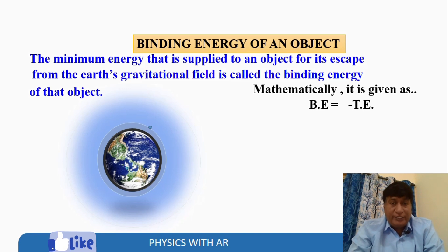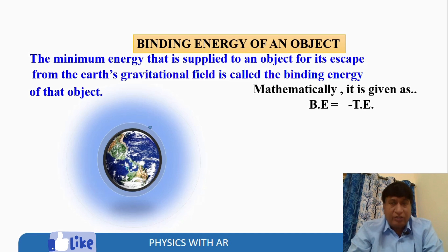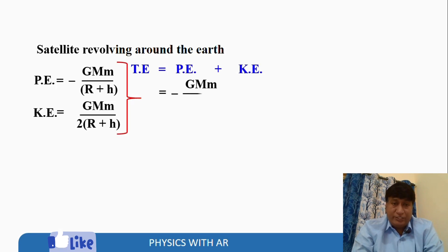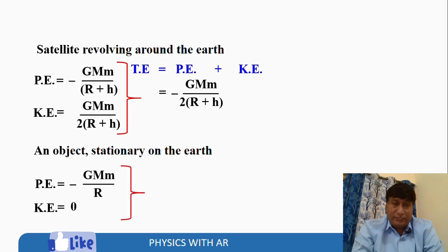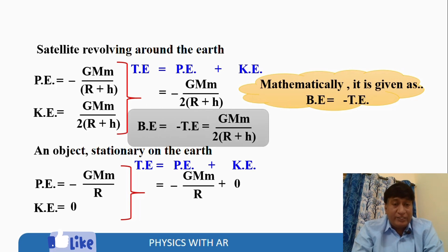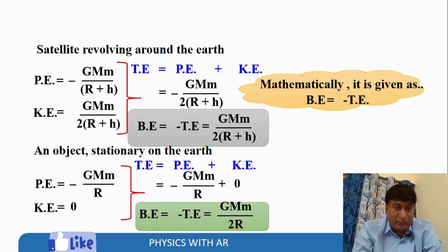The minimum energy supplied to an object for it to escape from Earth's gravitational field is called the binding energy of that object. Mathematically, binding energy is the negative of total energy. For a satellite revolving around the earth, binding energy equals G·M·m divided by 2(r + h).